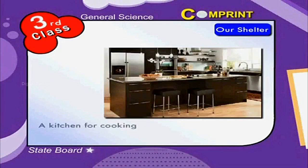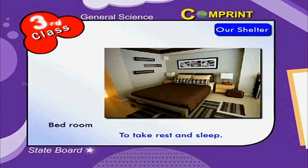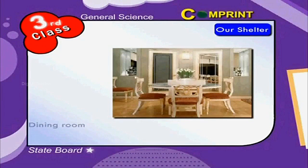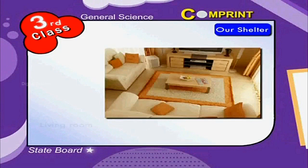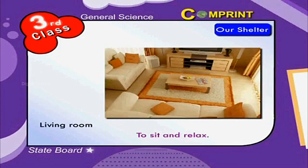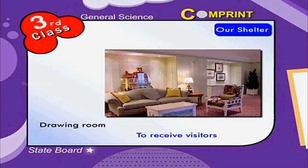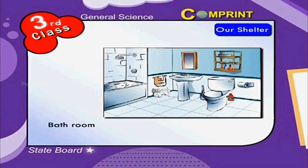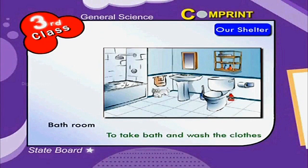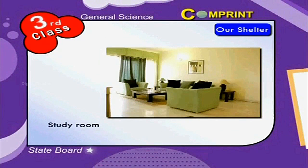An ideal house has different rooms for different purposes. A kitchen for cooking, a bedroom to take rest and sleep, a dining room to eat food, a living room to sit and relax, a drawing room to receive visitors, a bathroom to take bath and wash clothes, and a study room to read.